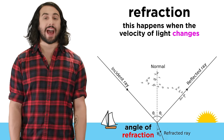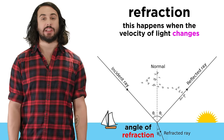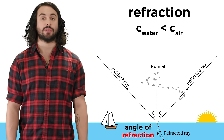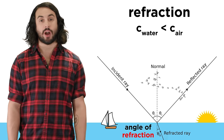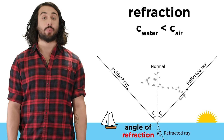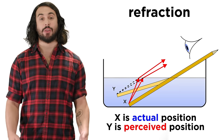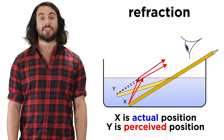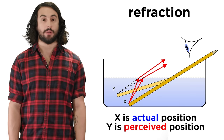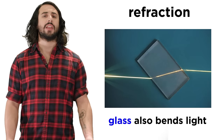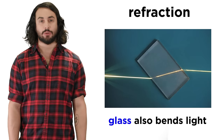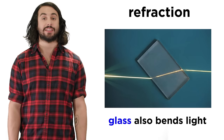This will happen anytime light's velocity changes, as light moves a little bit more slowly through water than air, which explains why objects in the water sometimes appear to be closer than they actually are. Light travels even a bit more slowly through glass.